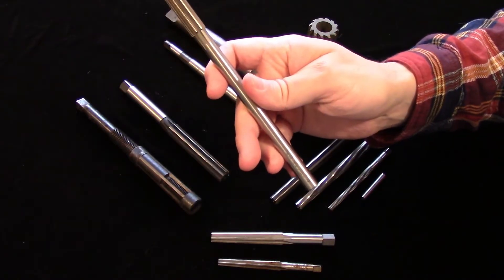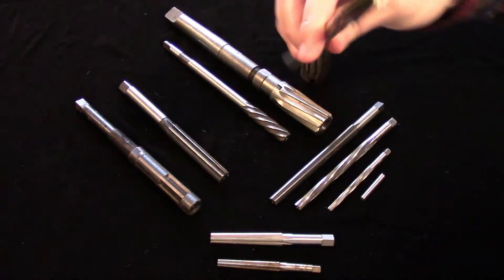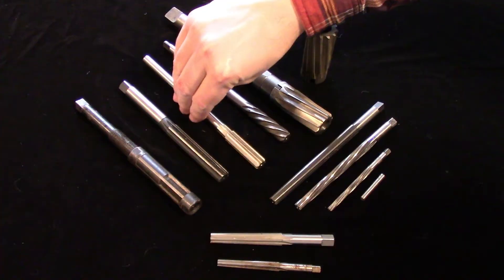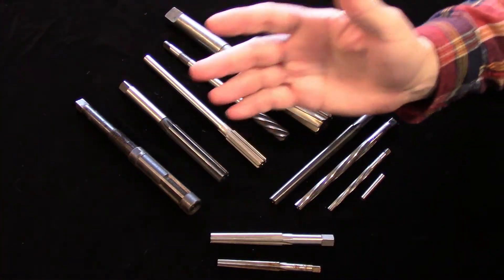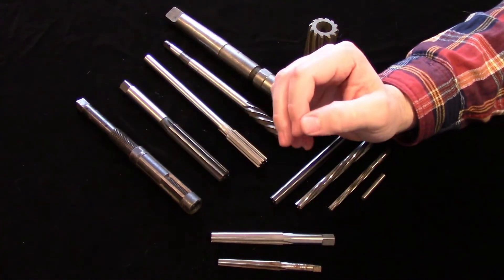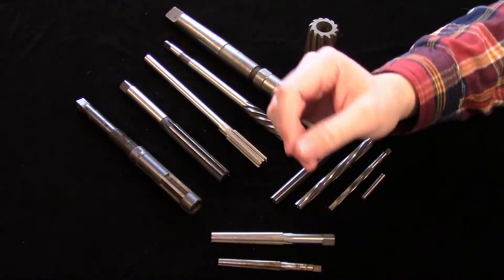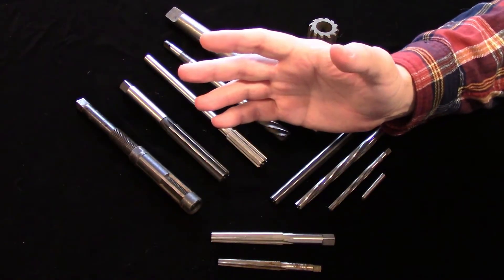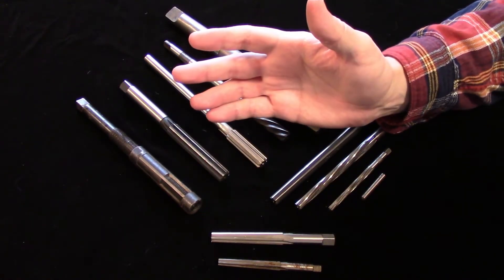One of the most used tools in many machine shops is an over-under reamer set, which consists of reamers one-thousandth of an inch over and under each fractional size, from an eighth of an inch up to a half an inch. This lets you get either a slip fit or press fit on dowel pins.